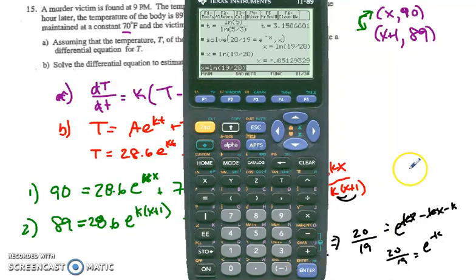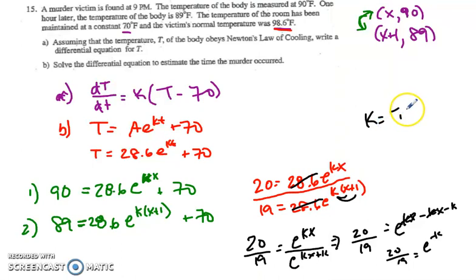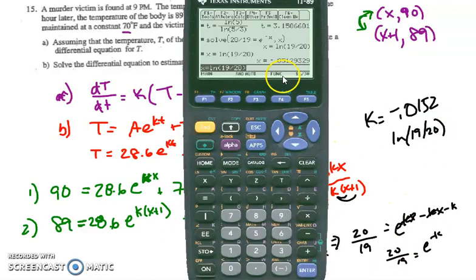And I find out that my k value is the ln of 19 over 20, which is the equivalent in decimal form of negative 0.0512. So k equals negative 0.0512, which is the same thing as the ln of 19 over 20.